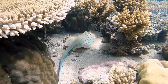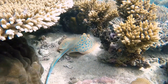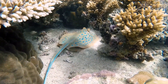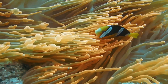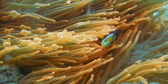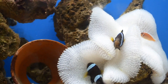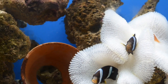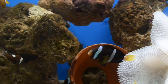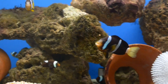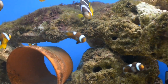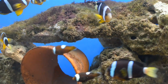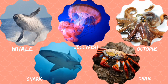Sea and ocean are examples of marine habitat. They together form the largest habitat on planet earth. It is home to a variety of organisms, from tiny plankton to the largest animal in the world, the blue whale. Whale, jellyfish, octopus, shark, and crab are found in marine habitat.